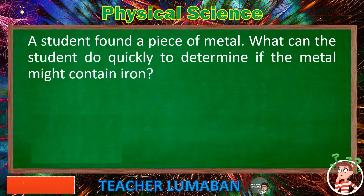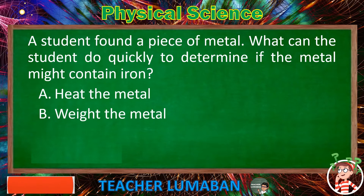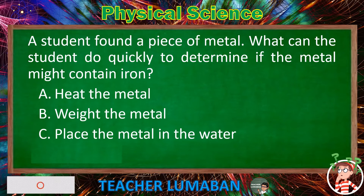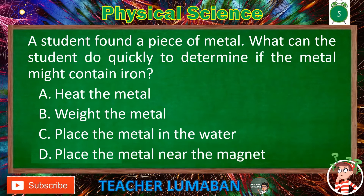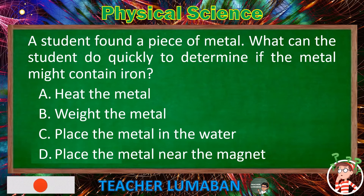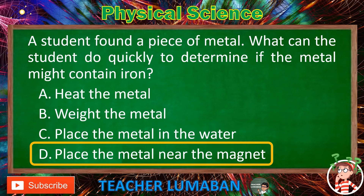A student found a piece of metal. What can the student do quickly to determine if the metal might contain iron? Letter A: Heat the metal. Letter B: Weigh the metal. Letter C: Place the metal in water. Letter D: Place the metal near a magnet. The correct answer is letter D, place the metal near the magnet.